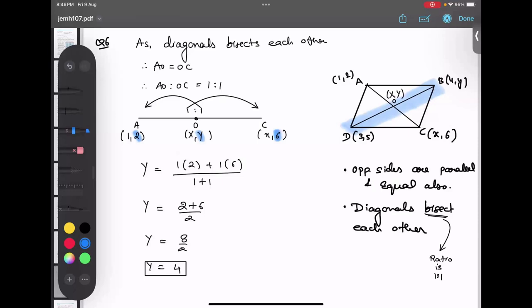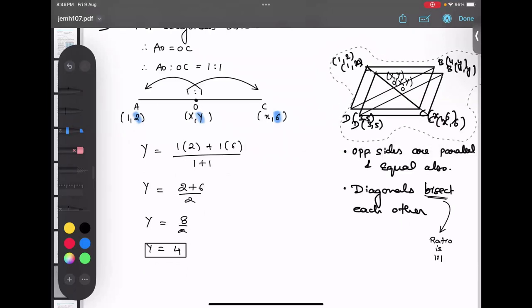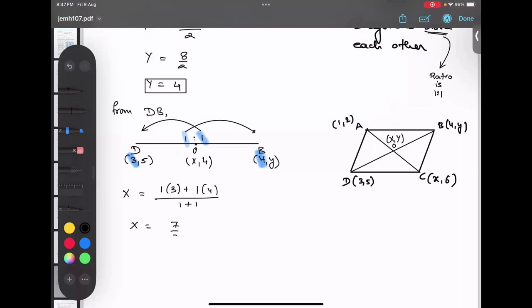So y value would be 2 plus 6 upon 2. Please do not take small y. Y equals to 8 upon 2 which is 4. So I got the value as 4. So this is the first thing. Now similarly I will be taking DB. Let me just draw DB for myself to avoid going back. So what I'm going to do, take DB. This is my point D, this is my point B. So D point is 3 comma 5 and B point is 4 comma y. And my point O again 1 is to 1, and this is x comma 4. X comma 4.